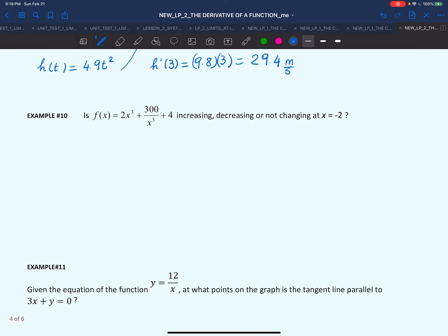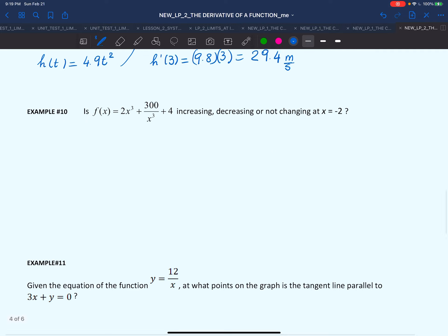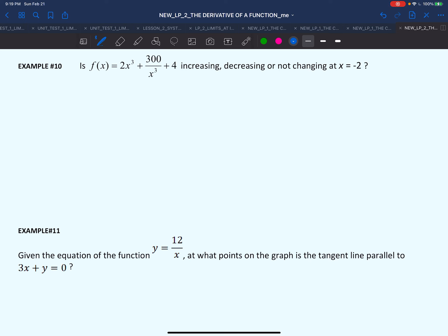In the next example, we have f(x) = 2x³ + 300/x³ + 4. We're asked to identify whether the function is increasing, decreasing, or maybe not even changing at x = -2. What does that mean? It means we want to check with the derivative.